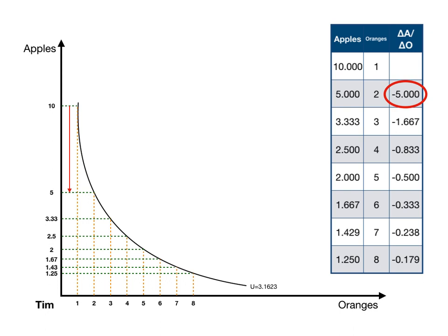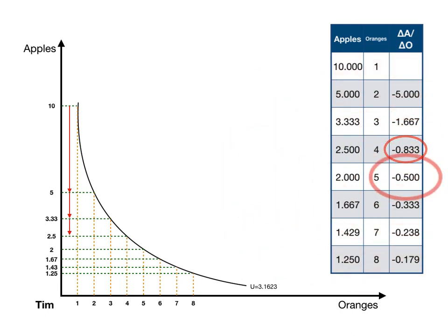Tim has a lot of apples — ten apples and one orange. In order to obtain one more orange, going from one to two, he's willing to give up five apples. When he decides he would rather have a third orange, he's only willing to give up three and a third apples. A fourth orange, he's willing to give up only two and a half apples. A fifth orange, he's willing to give up only two apples. As Tim is obtaining more and more oranges and giving up apples, he's willing to give up fewer and fewer apples for an additional orange. We call that diminishing marginal rate of substitution.